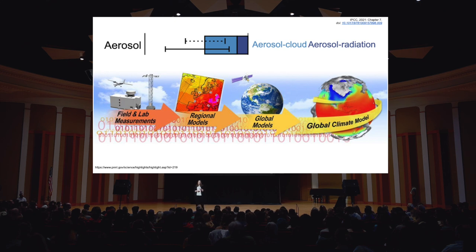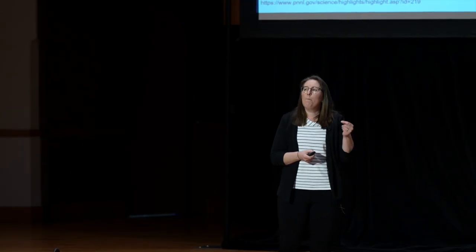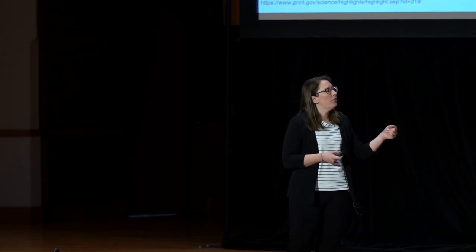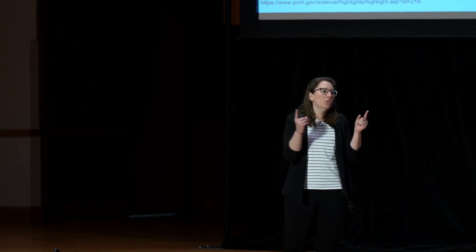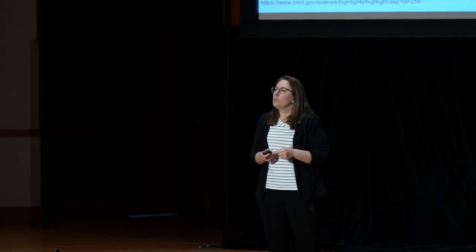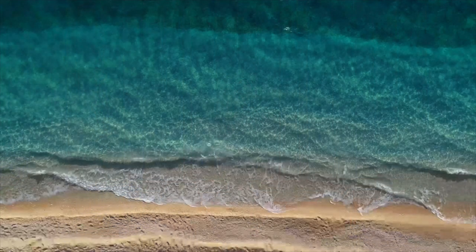As our ability to measure aerosols has improved over time, our understanding of their production, composition, and overall properties that engage in climate-relevant processes has improved along with it. We're now better able to approximate the chemical composition of aerosols in global climate models, and this significantly reduces the uncertainty in the role that aerosols play in our overall climate. So the next time you're sitting at the beach relaxing, in addition to just taking in the views, maybe also take a second to appreciate the complex chemistry that is going on in the air around you.